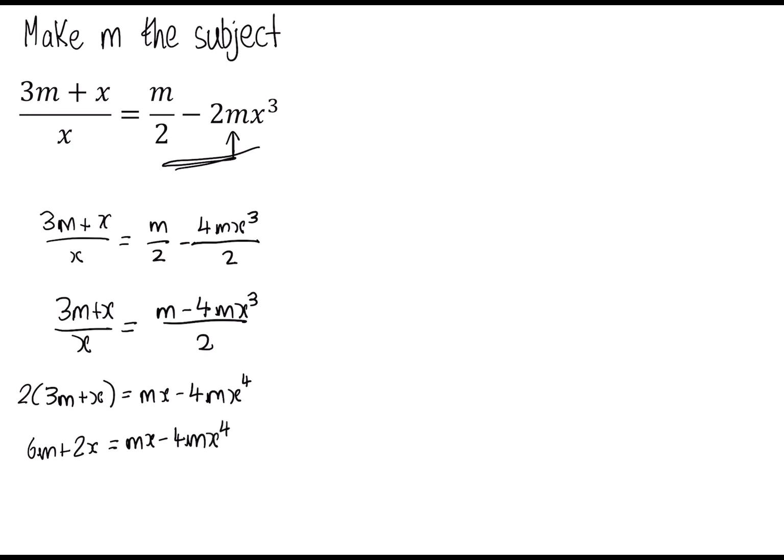So let's move over to this side. Now we want, remember what I said, we're going to try and get all the m's on one side of the equation. So let's move them all to the left hand side. 6m plus 4m x to the 4 minus m x is equal to, we'll bring that 2x to the other side. So take away 2x from both sides. Now notice we have m in each of these terms, so we can take m out as a factor.